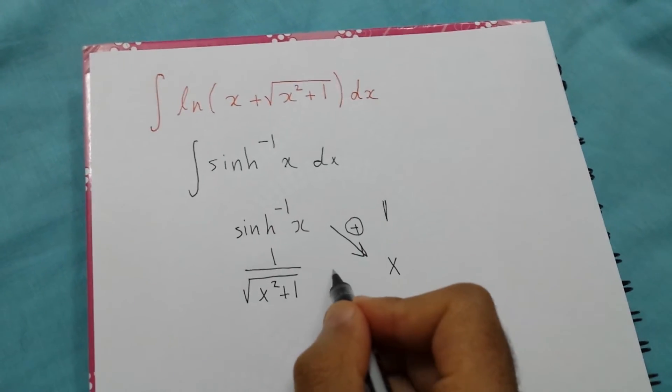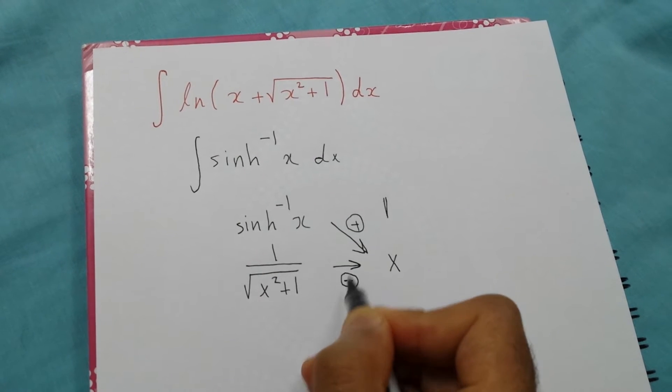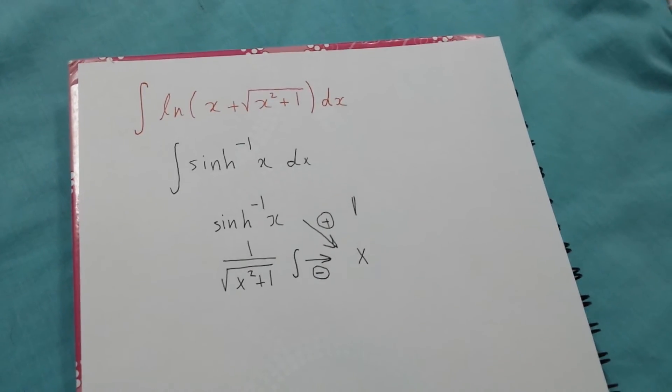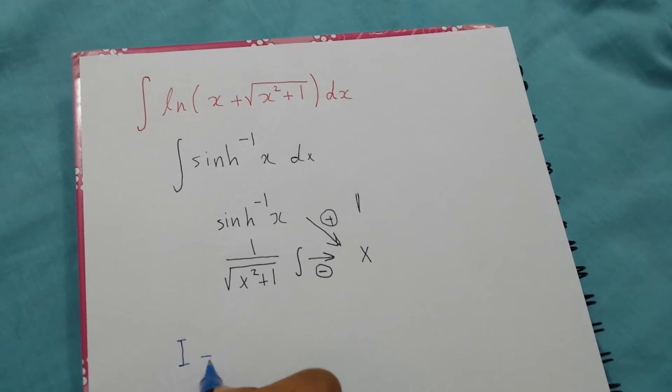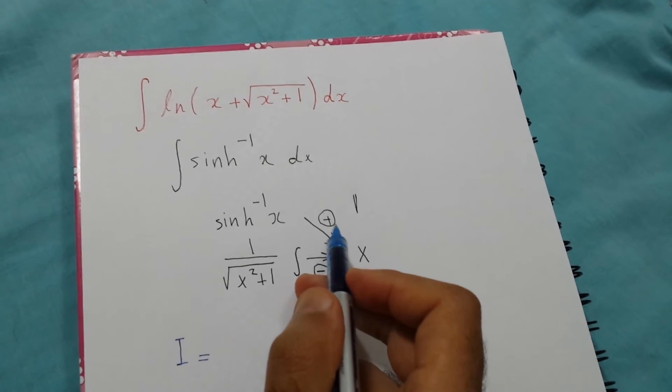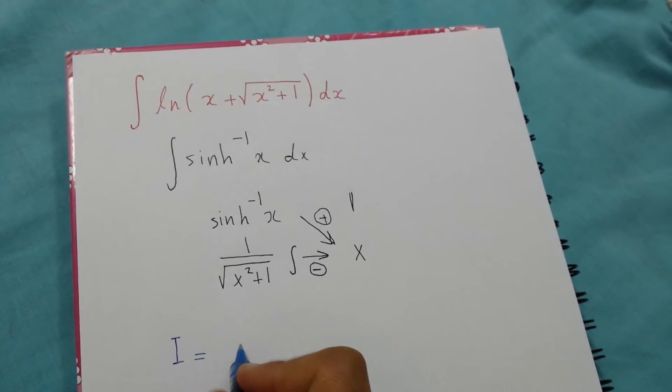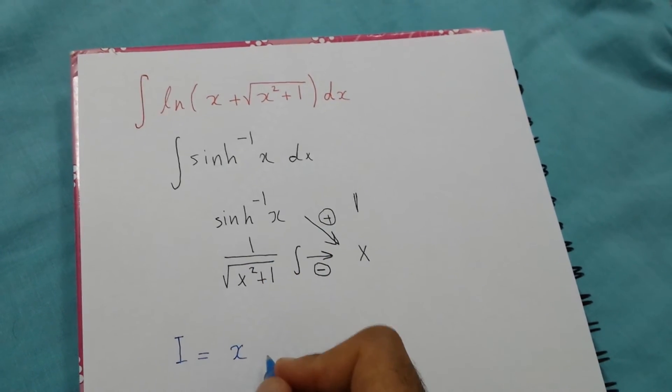So the integral will be, without integration: x·sinh⁻¹(x), which is x·ln(x + √(x²+1)), minus the integral with both terms.